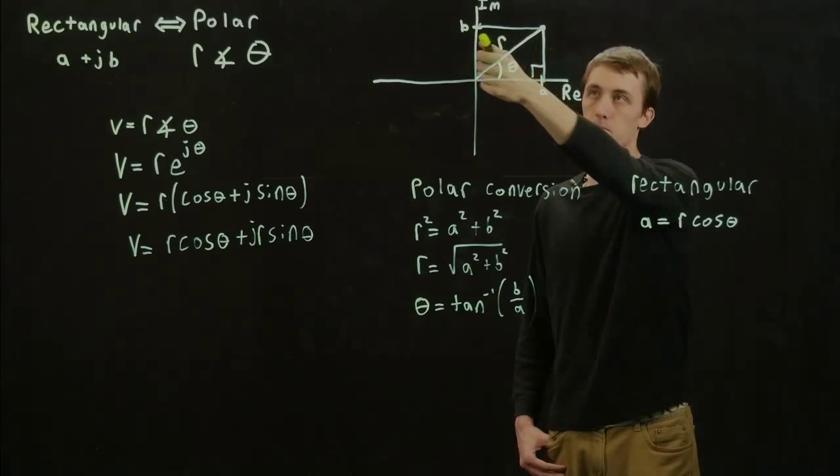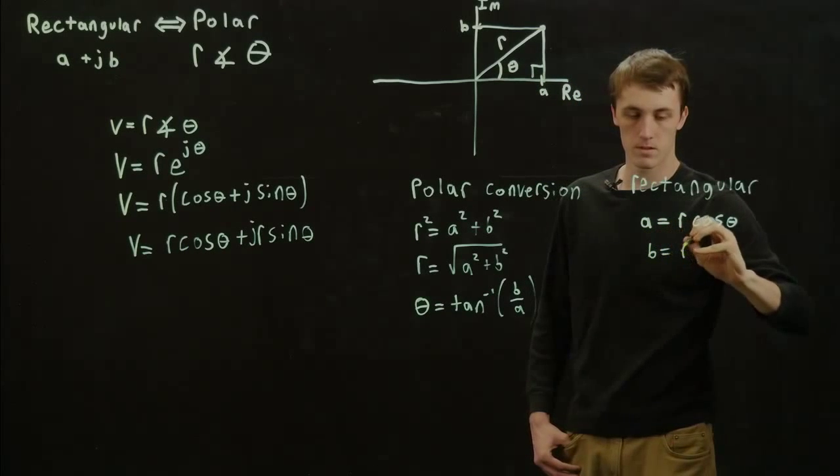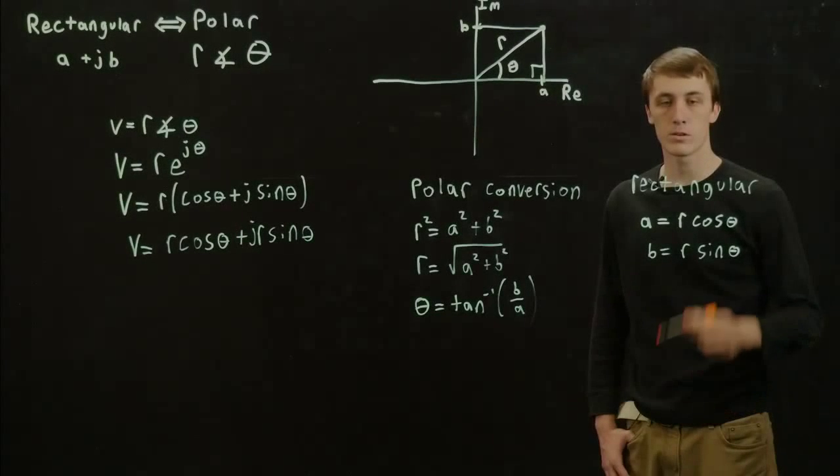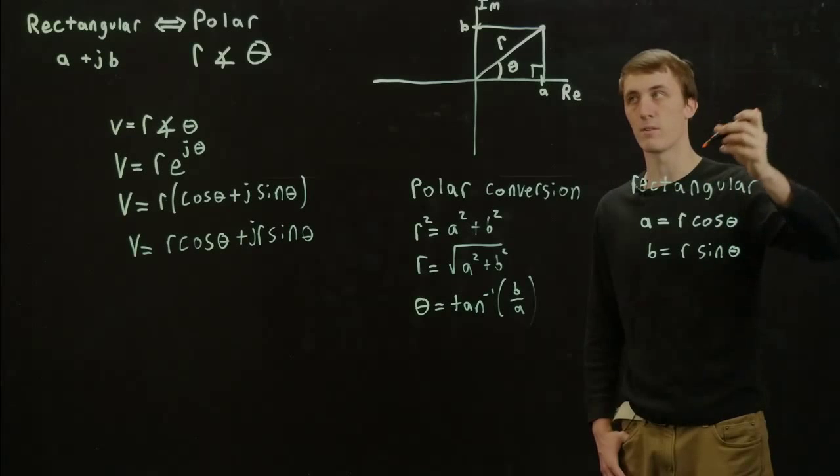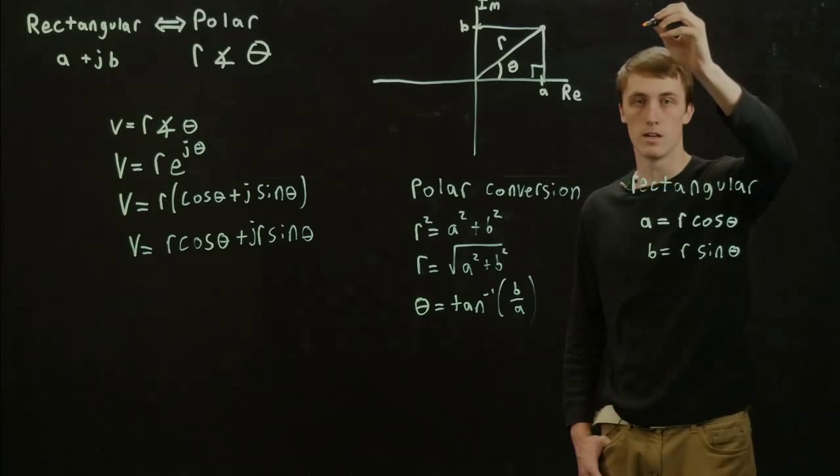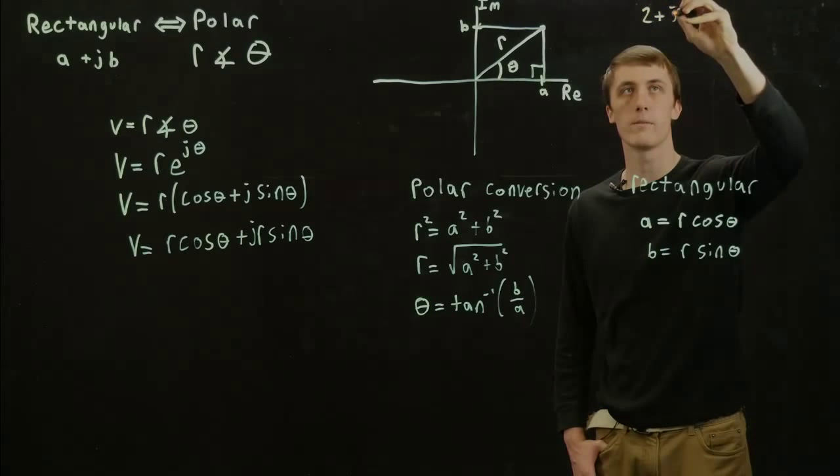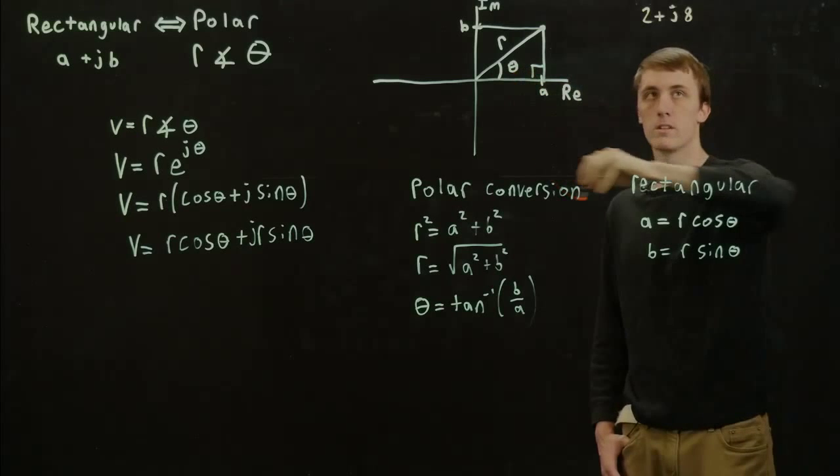And B, as it's on the opposite side, will equal R sine of theta. And if we want to do a quick example here with a quick conversion and graphing it, we can graph 2 plus J times 8. And if we put this on a real imaginary plane,